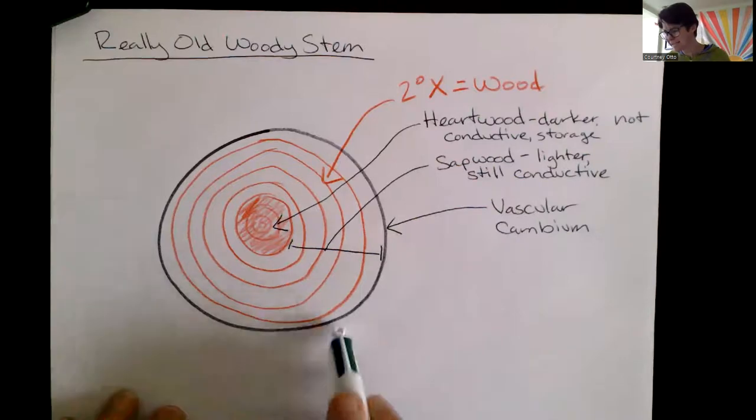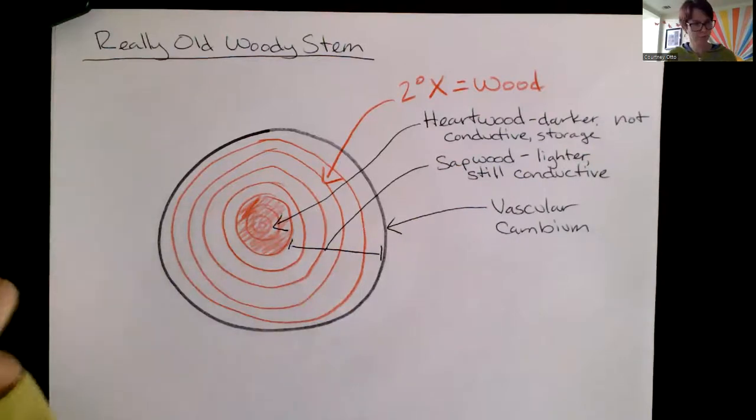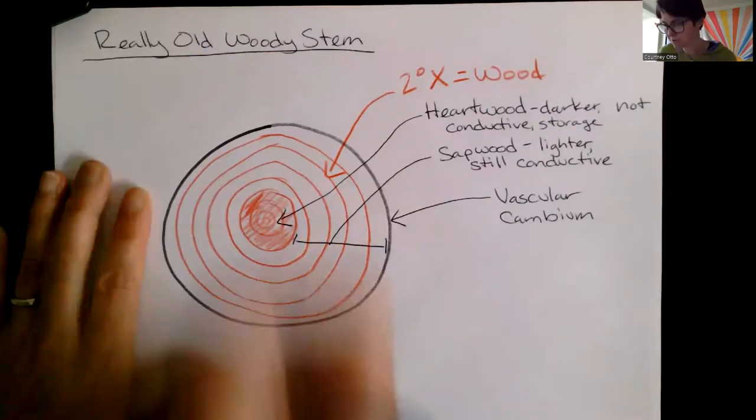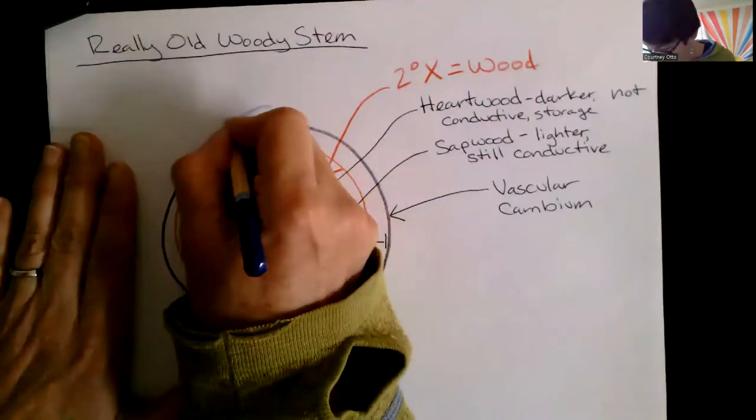All right, that's in the inside of our vascular cambium. The outside of our vascular cambium, remember when it divides to the outside we're going to get secondary phloem produced and I'm just going to add a layer.